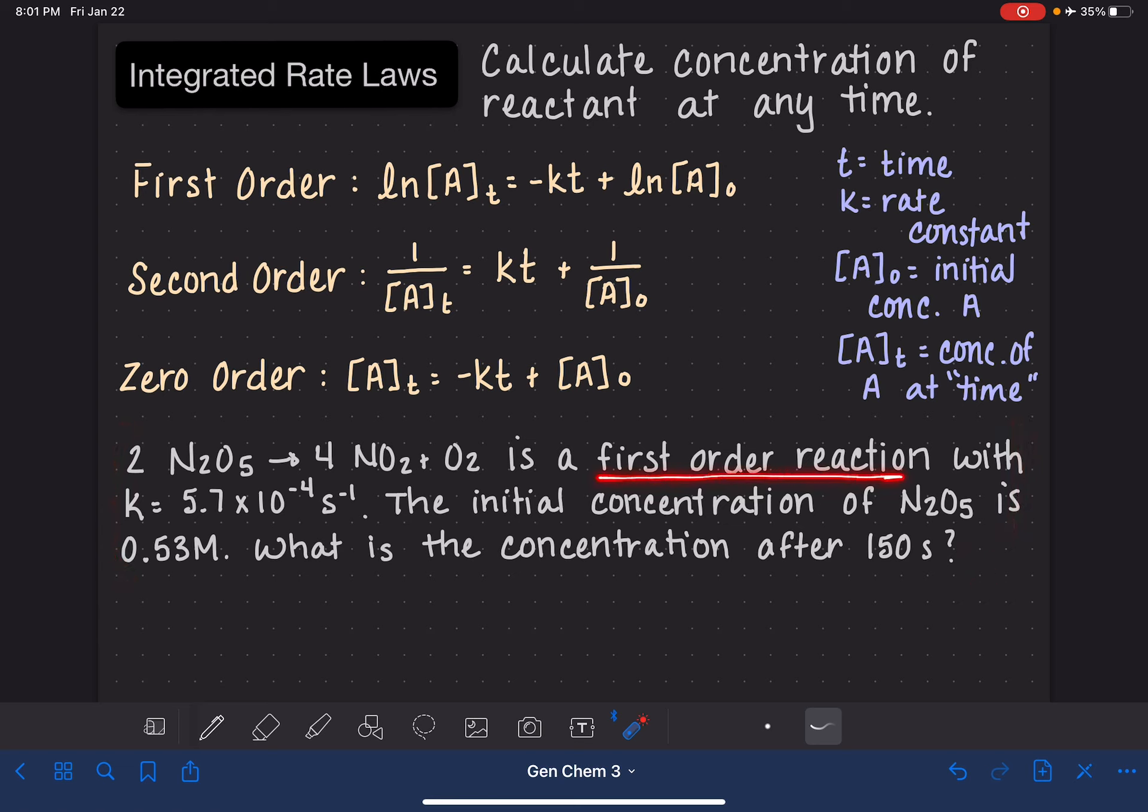It tells us that it's a first order reaction, and we need to know what the order is so that we know which equation we should be using. It's giving us the value of the rate constant, the initial concentration, and it wants us to calculate the concentration after 150 seconds have passed.